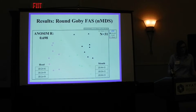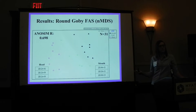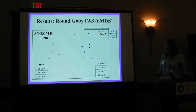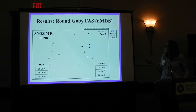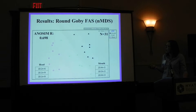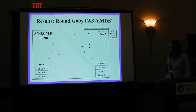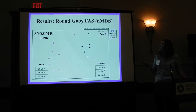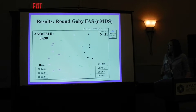Now onto my fatty acid signatures. First, round goby. On an nMDS plot, the farther away two points are from each other, the more different they are. The west headwater site is in pink, the green is the east, and the black is the mouth. You can see these kind of separate out into three groups. The headwater sites differed from the mouth by having higher N6 and N9 fatty acids in the headwaters, and the mouth had higher N3. This follows my prediction for the river.